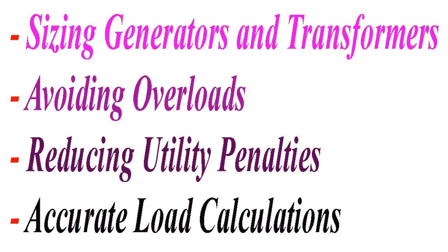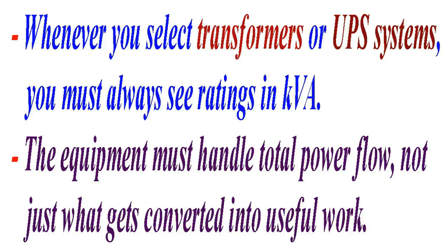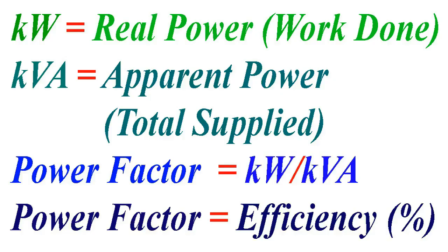Here is why this is crucial in the field: sizing generators and transformers, avoiding overloads, reducing utility penalties, and accurate load calculations. If you size a generator based on KW but your load has a low power factor, you will overload it. Some utility companies charge you not just for the KW you use but for your KVA demand, or even penalize you for low power factor. When selecting a transformer or UPS you always see ratings in KVA — because the equipment must handle total power flow, not just what gets converted into useful work.